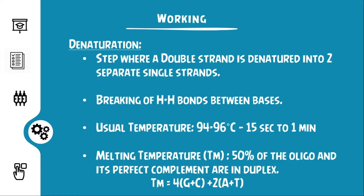In this step, a factor called the melting temperature is very important. It is the temperature at which 50% of the oligos and their perfect complement are in duplex. The formula for calculating the melting temperature is given below: Tm = 4 × (G + C) + 2 × (A + T). This would be very important in calculating the annealing temperature.